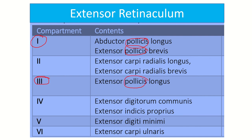Compartment five contains extensor digiti minimi, and compartment six contains extensor carpi ulnaris. To remember the pollicis group: compartment one and compartment three are both dedicated to pollicis muscles. Compartment one contains abductor pollicis longus and extensor pollicis brevis (EPB), and compartment three contains extensor pollicis longus (EPL).